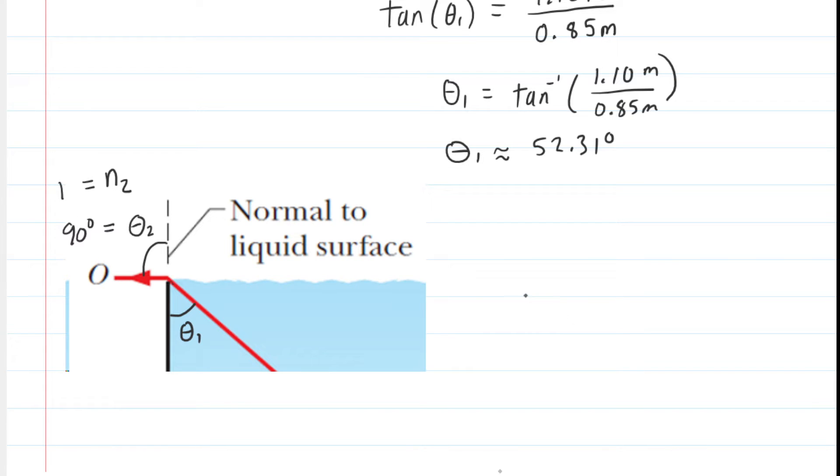Now we can use the law of refraction to guide us in finding the index of refraction. Let's write down that law right now. Since we're looking for the index of refraction of the blue liquid, we can call that n₁ because that's where the light is originating. We're trying to solve for n₁, so let's divide both sides of this equation by sine of theta one.